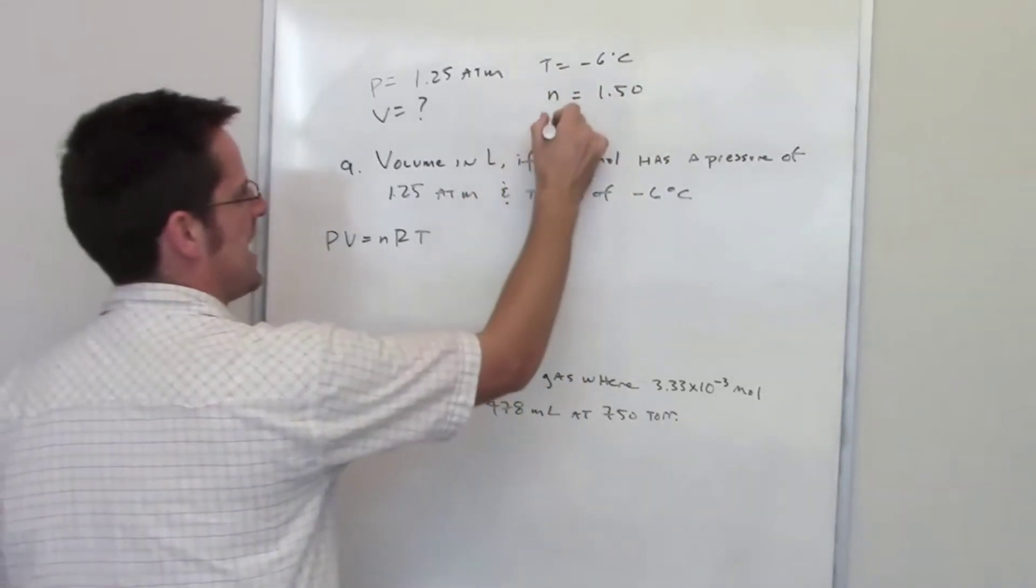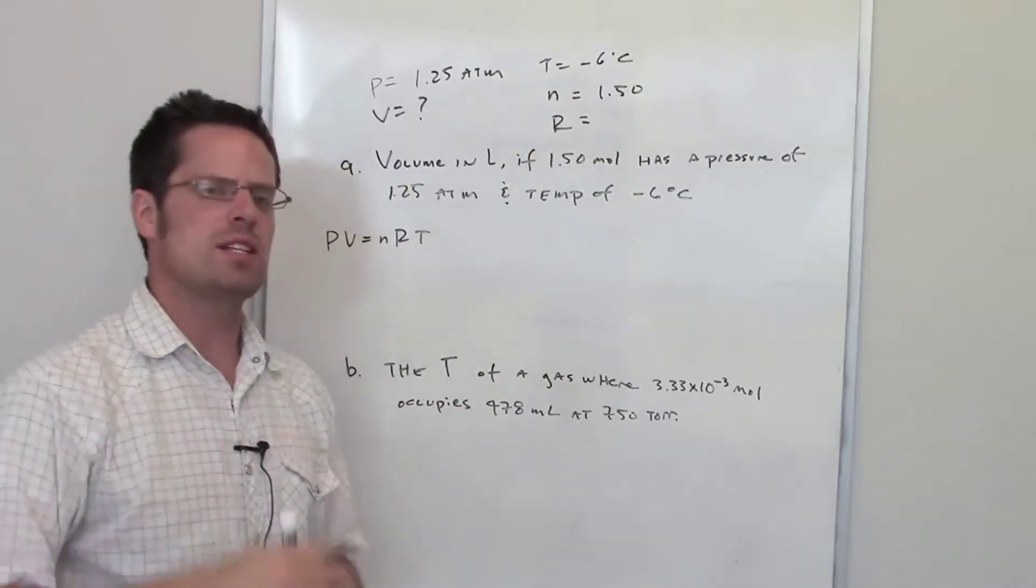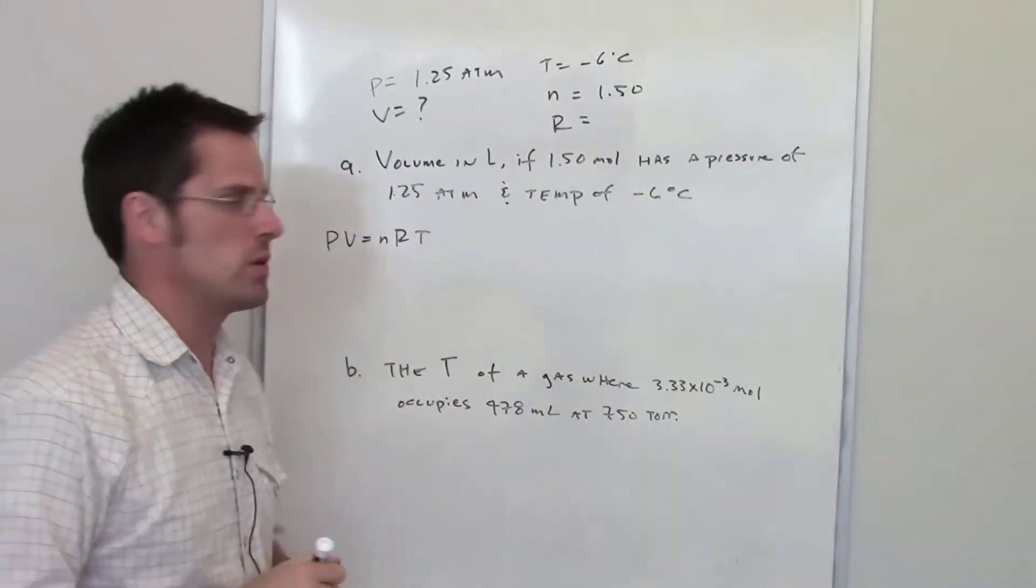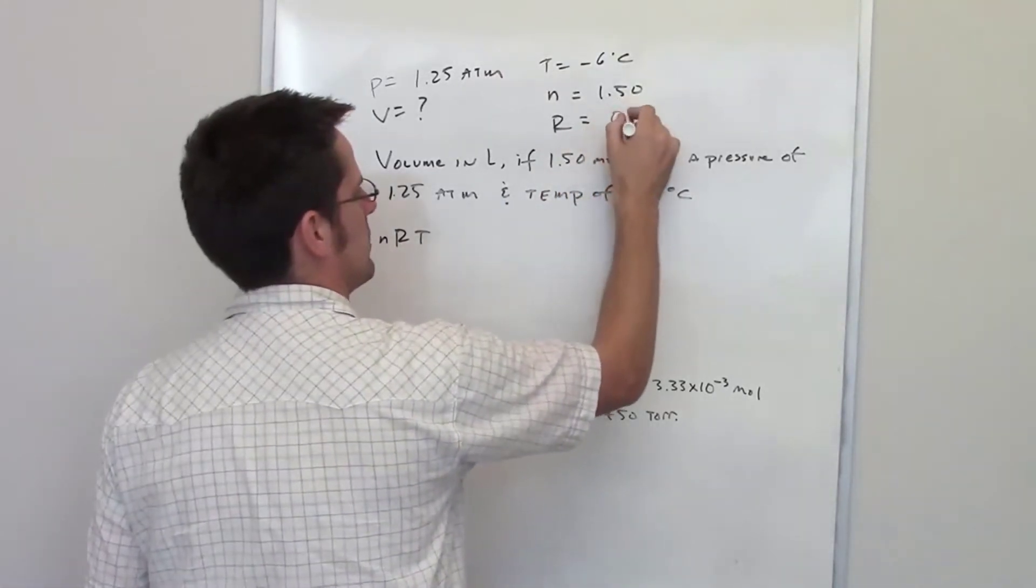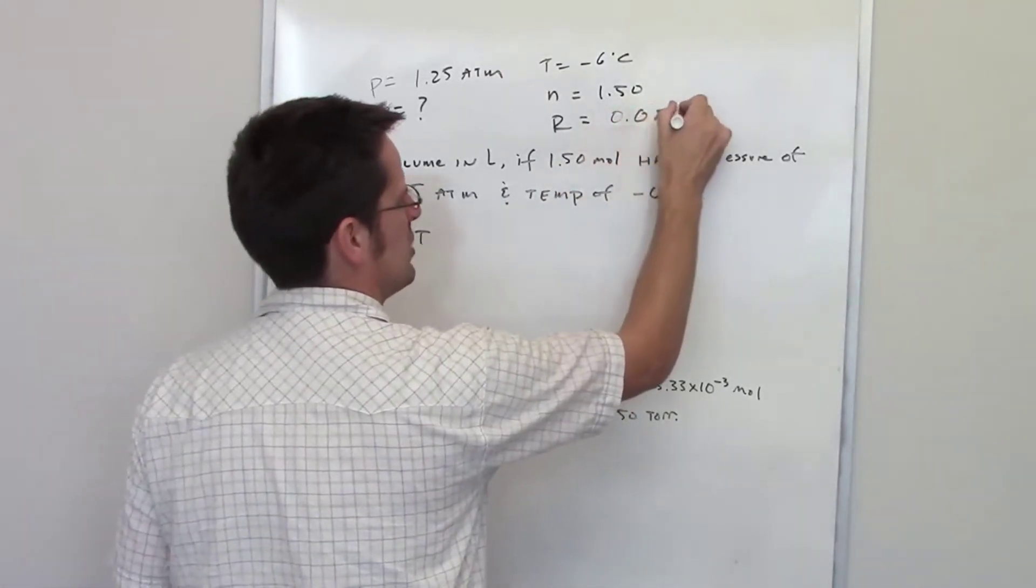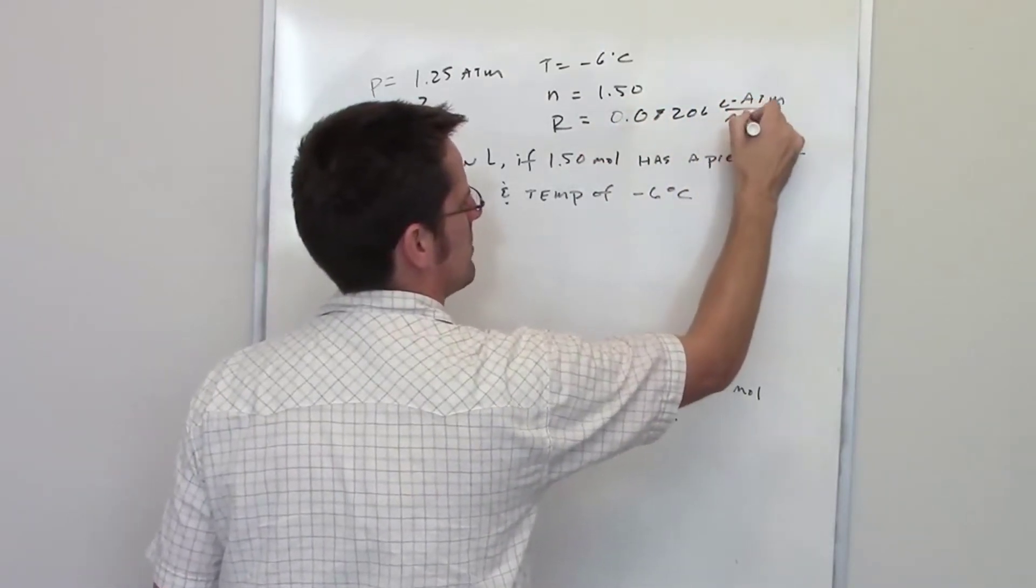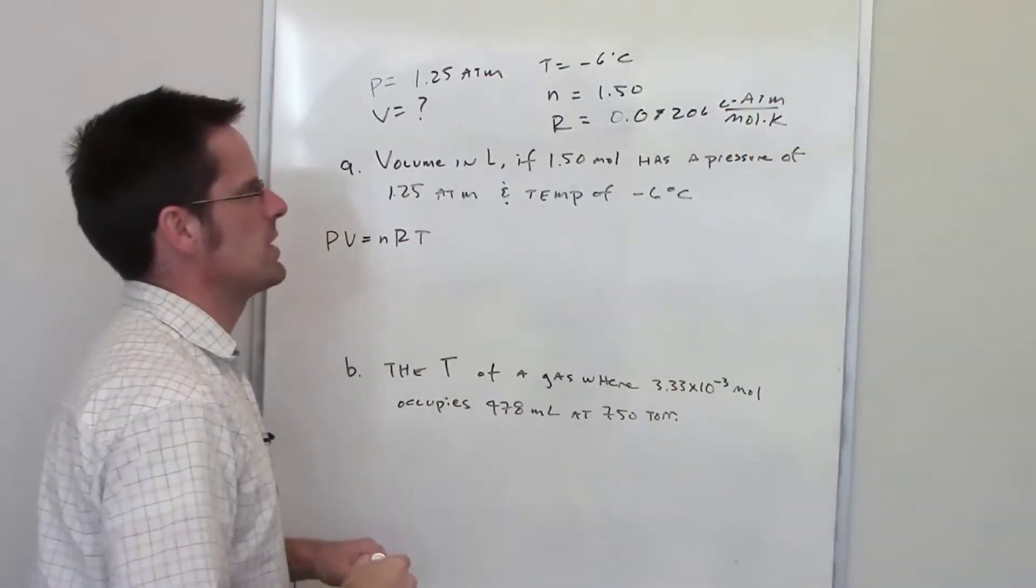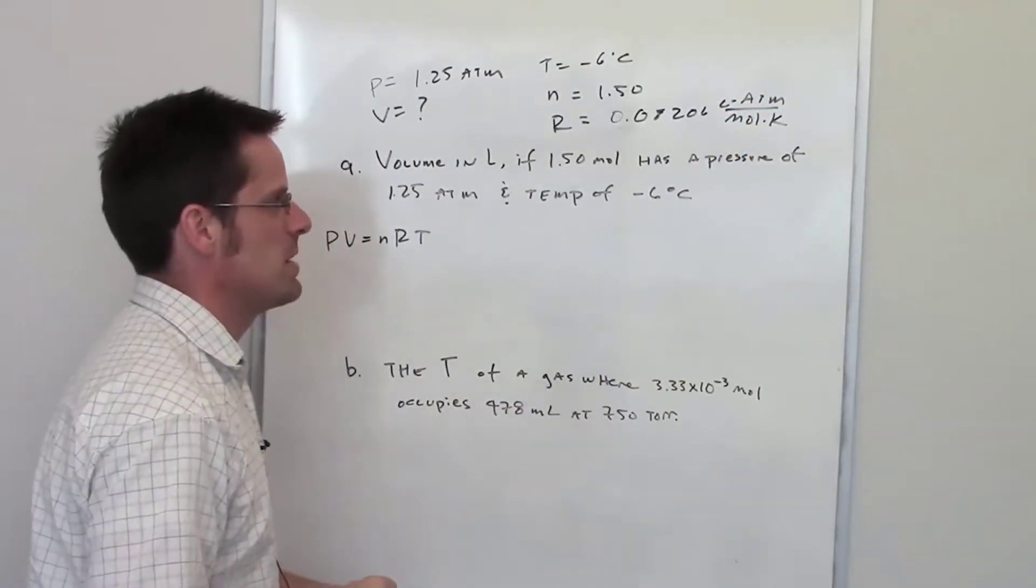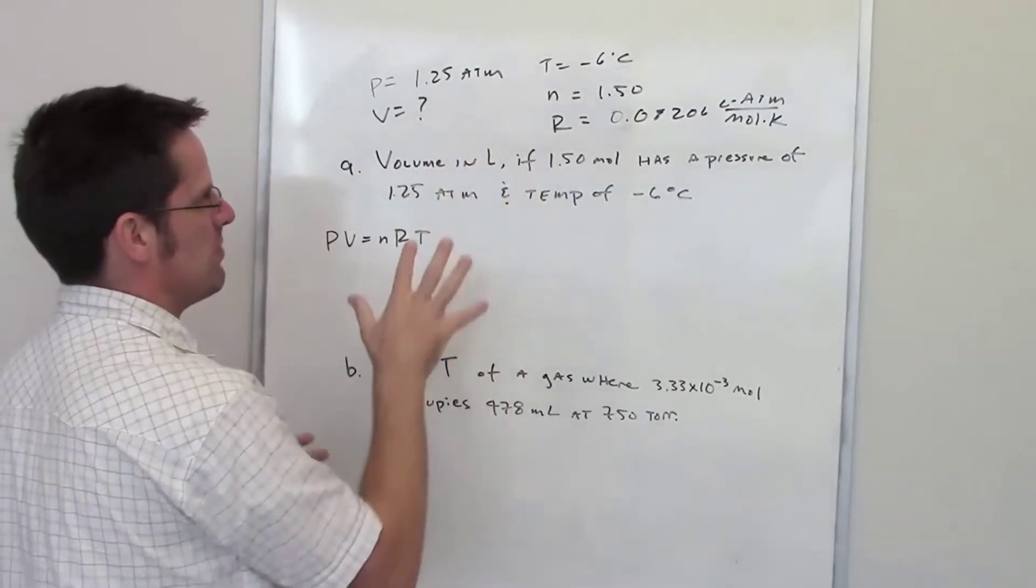We have to remember the ideal gas constant. Which ideal gas constant do we want to choose? Well, that's going to depend on what units we want to use. I personally prefer this ideal gas constant for this kind of problem, 0.08206 liter atmospheres per mole Kelvin. Sometimes I call that liter atmospheres per molk. The reason I like that one is because I've used it so many times that I just have it memorized. The trick is that you have to make sure that all of your other values have matching units.